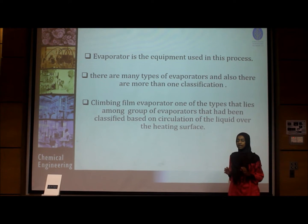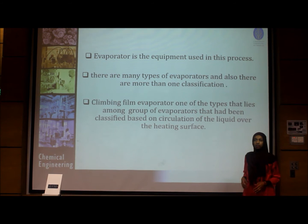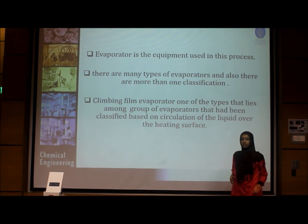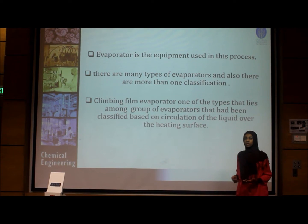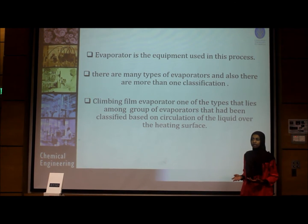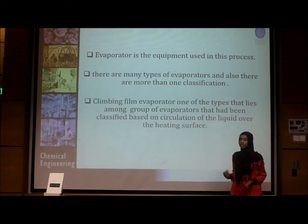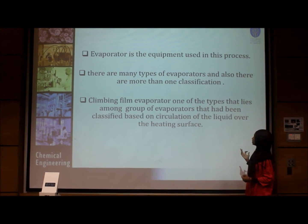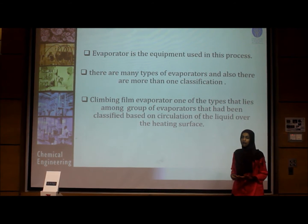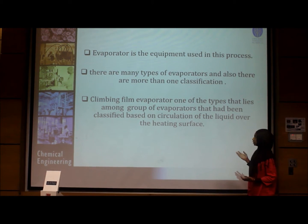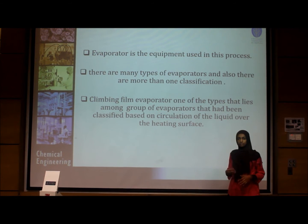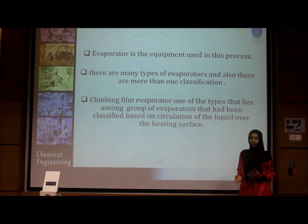In the evaporation process, the equipment used is called an evaporator. There are many types of evaporators and many classifications for them. Classification can be based on the type of process — continuous or batch — the effect, such as multiple effect evaporator, or the circulation of the liquid over the heat transfer area. Our evaporator in this experiment is a climbing film evaporator, which belongs to the group classified based on circulation of the liquid.